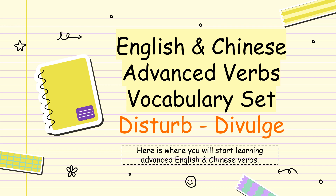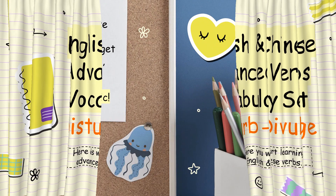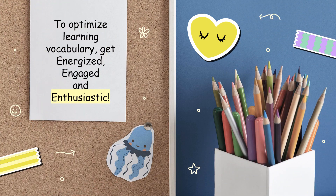Hi there and welcome. This is your English and Chinese advanced verbs vocabulary set. The words are arranged in alphabetical order from the word disturb to divulge. Here is where you will start learning advanced English and Chinese verbs. Let's begin. To optimize learning vocabulary, get energized, engaged and enthusiastic.